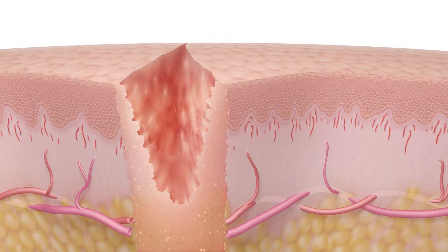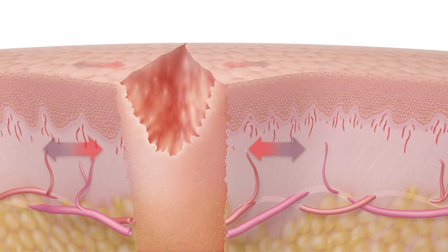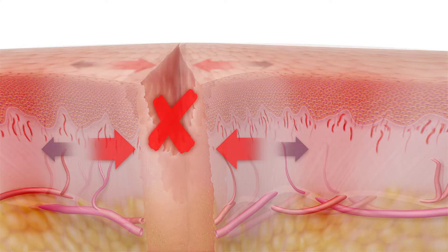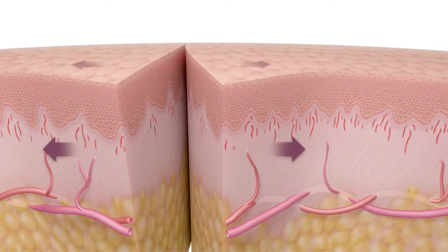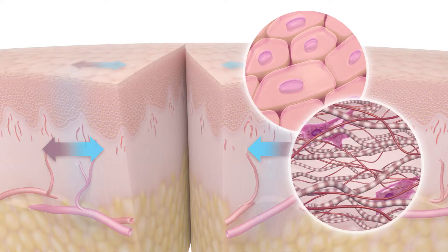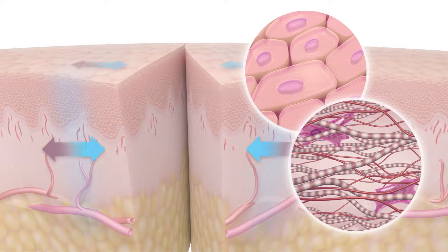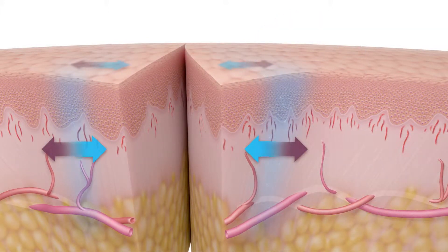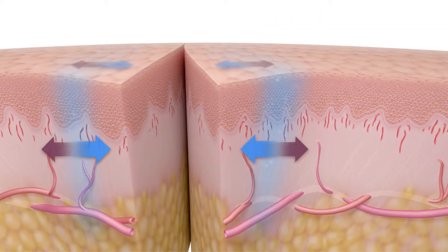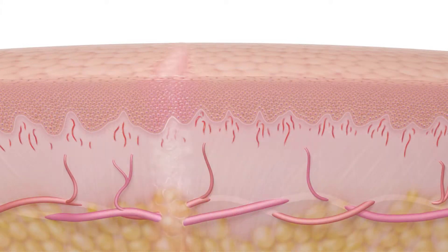Once the wound edges are granulated and fixed, they become very resistant to re-approximation. However, skin can be returned to its original state when dynamic appositional forces are maintained in the early stages of healing. Cellular structures return to their normal tension configuration and granulation is reduced, preventing the skin edges from becoming fixed and promoting fast healing.